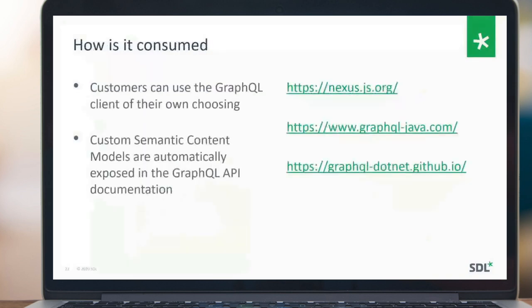You can use the GraphQL client of your own choosing. For developers, any semantic content model that is configured will also be present in the GraphQL API documentation, so they can refer to the documentation, see which parameters and fields are available, and use them directly in the API.